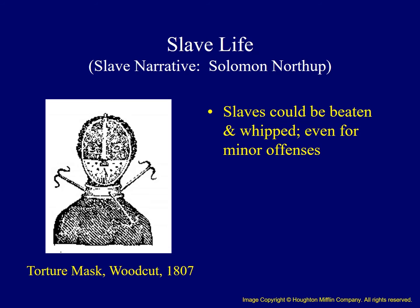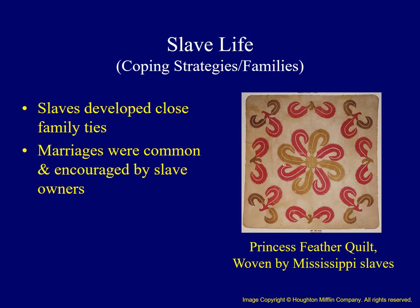In the early 1800s, some planters adopted a so-called restraining mask to punish their slaves. Slaves developed many coping strategies as they dealt with their life under slavery. One strategy was to maintain close family ties. Marriages may not have been legally recognized unions, but they were encouraged by slave owners and offered a network of support for family members.